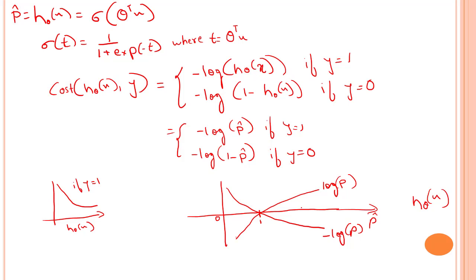So both scenarios when there's a mismatch — our model predicts 1 but the actual case is 0 — we will be getting a very high cost. The cost will be very close to 0 if the estimated probability is close to 0 for a negative instance, which is exactly what we want. The cost function over the training set is the average cost over all training instances.